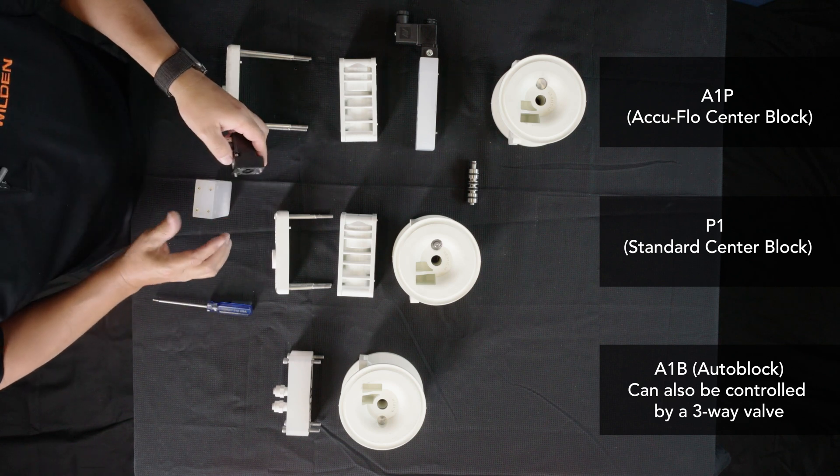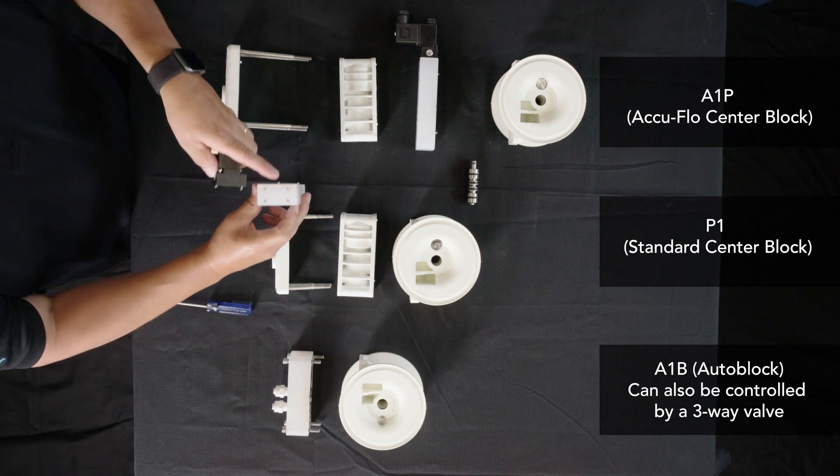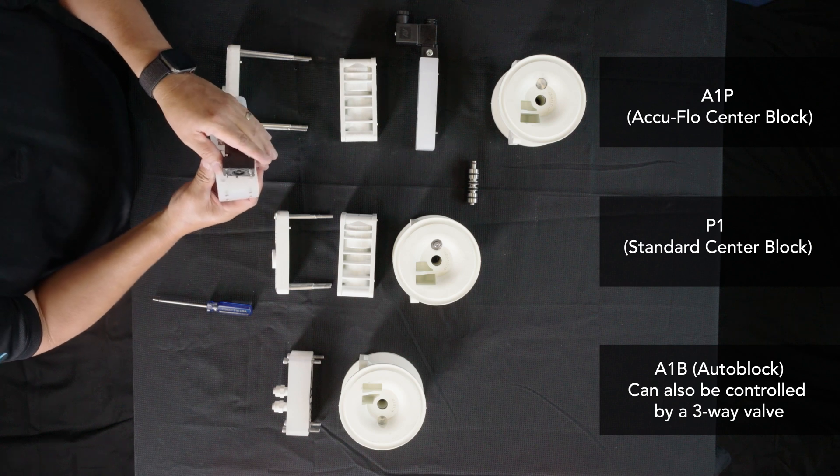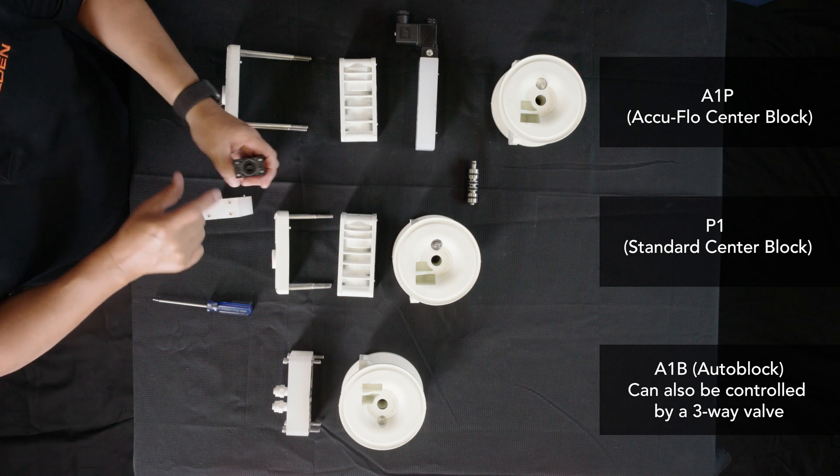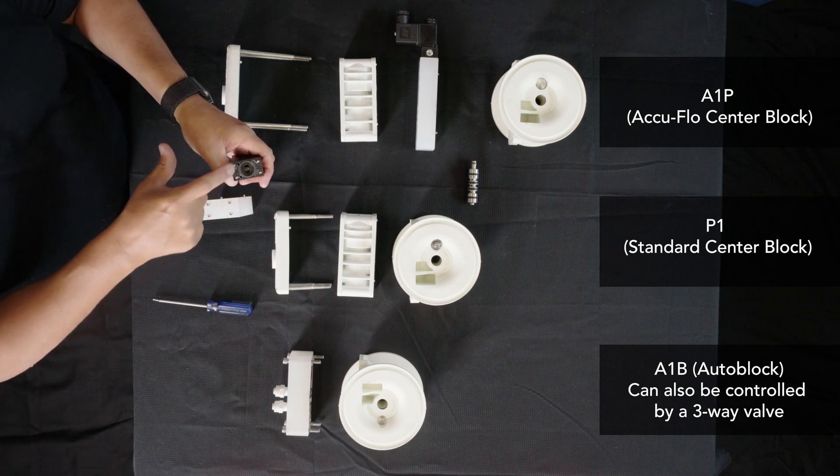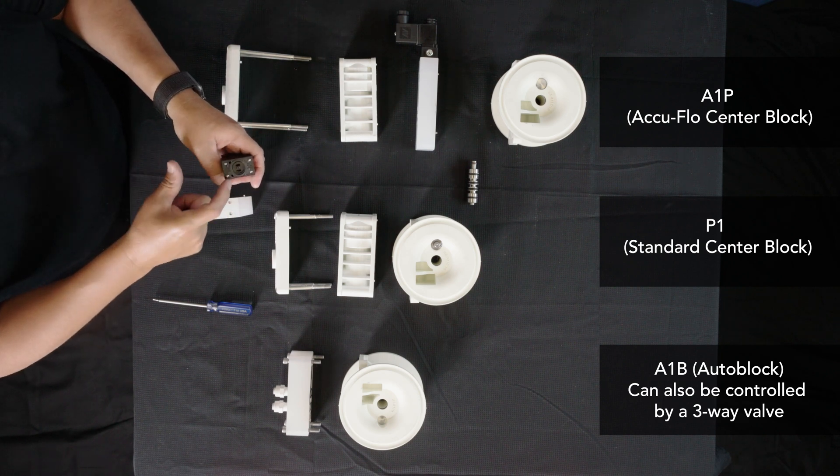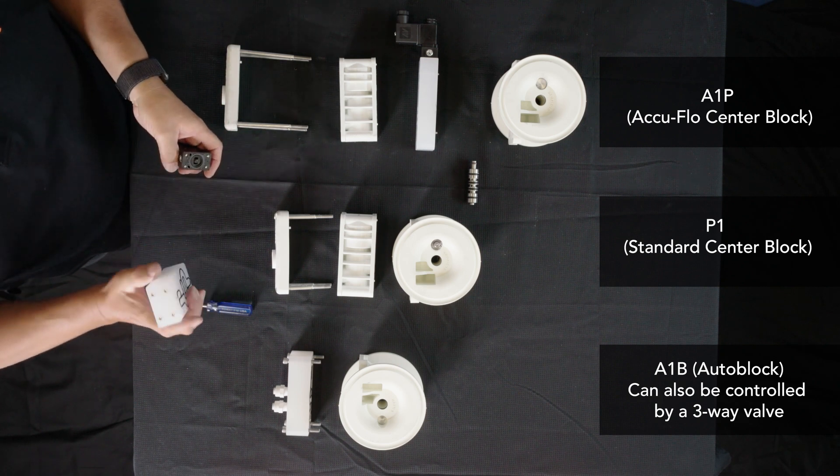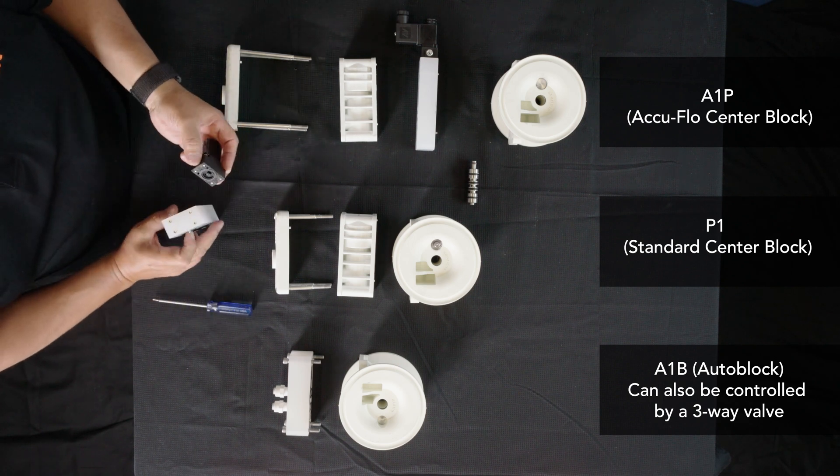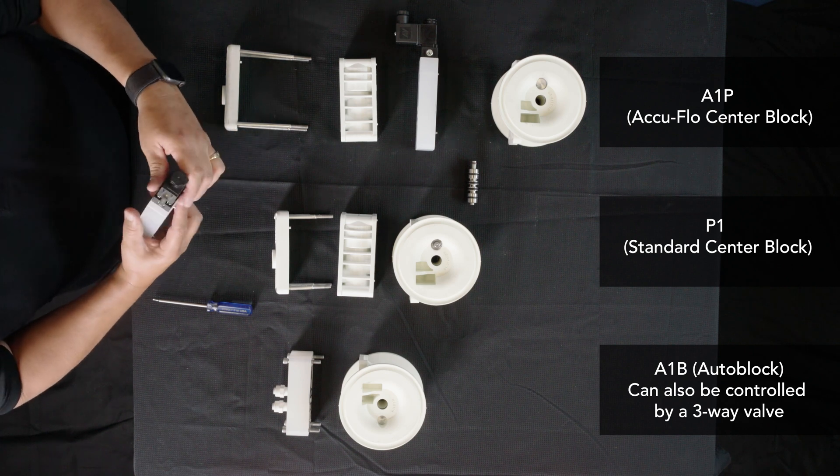If you look on the top, there are two ports. On the top of the controller, there are two ports. When this is energized, one gets pressurized. When it's de-energized, the other gets pressurized. And that sends a signal to the block to open up the ports for the air valve.